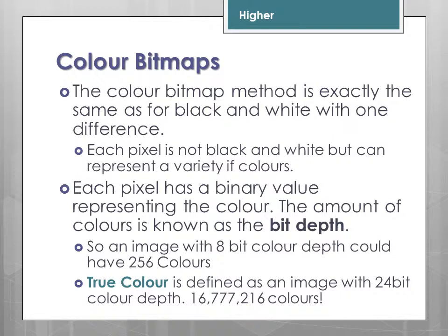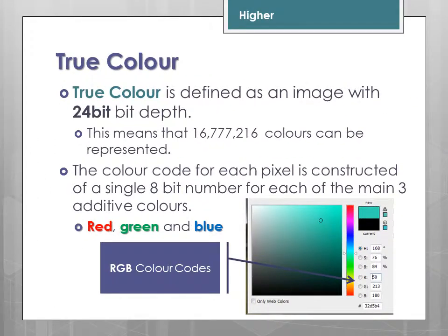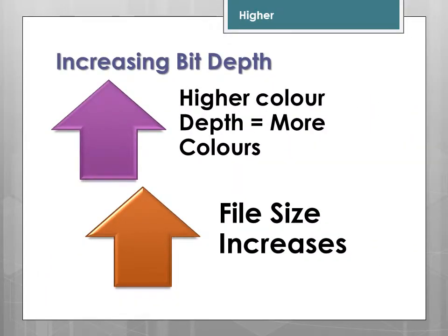True colour is defined as an image with 24-bit colour depth, meaning any one pixel can represent any one of 16,777,216 colours — approximately 16.7 million colours. If you use any graphics programme, you will find RGBs when choosing colours — these stand for red, green, and blue, the three main additive colours from which each pixel's colour code is derived. Increasing the bit depth directly increases the number of colours representable, but also increases the file size.